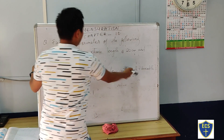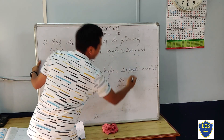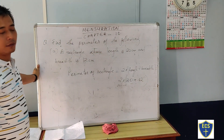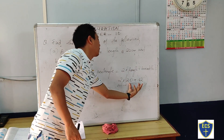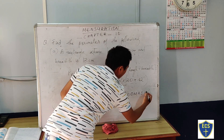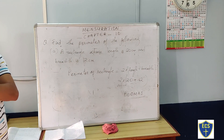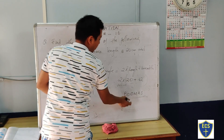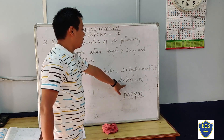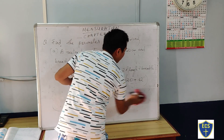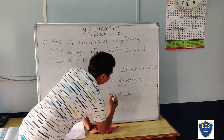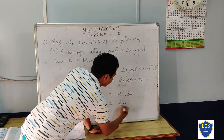Length is 20 cm, breadth is 12 cm. So: 2 into (20 plus 12). Inside the bracket — we use the BODMAS rule. Bracket comes first: B-O-D-M-A-S — bracket, order, division, multiplication, addition, and subtraction. We have a bracket here, so we solve the bracket first: 20 plus 12 equals 32. Then 32 into 2 — two twos are 4, three twos are 6 — gives 64 cm. The perimeter of the rectangle is 64 cm.